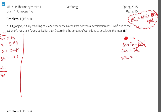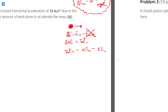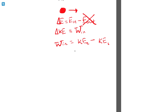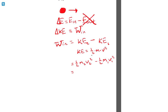We can calculate work in by finding the kinetic energy at the end of the process, KE2, minus the kinetic energy at the beginning, KE1. Kinetic energy is one half times mass times velocity squared, so this becomes one half m·v2² minus one half m·v1². Since mass doesn't change, m2 equals m1, both 30 kilograms, so we can factor it out: one half times mass times (v2² minus v1²).